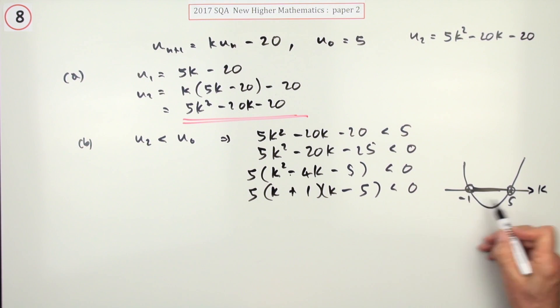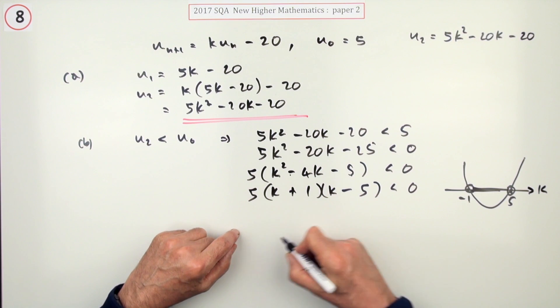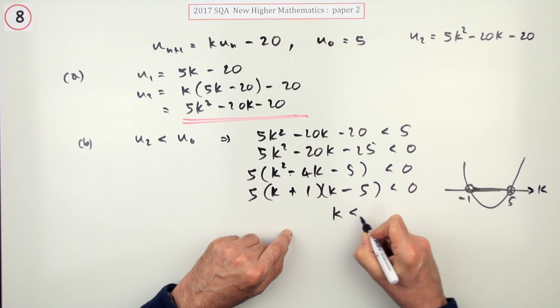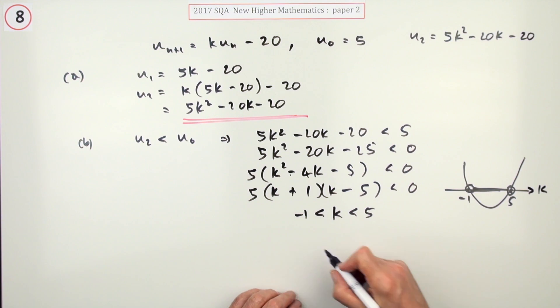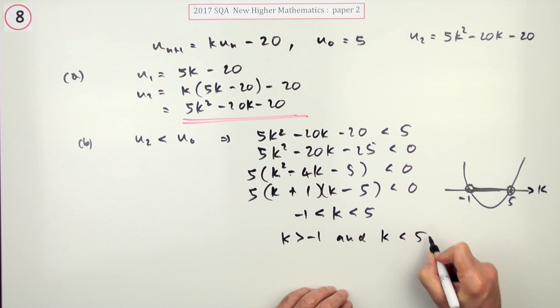I want the values of k that sit between them. So my answer is quite simply negative 1 is less than k is less than 5. And it's perfectly okay to write it that way. The other way to write it would have been k is greater than negative 1 with an 'and', k is less than 5. But it should be perfectly satisfactory just to write that.